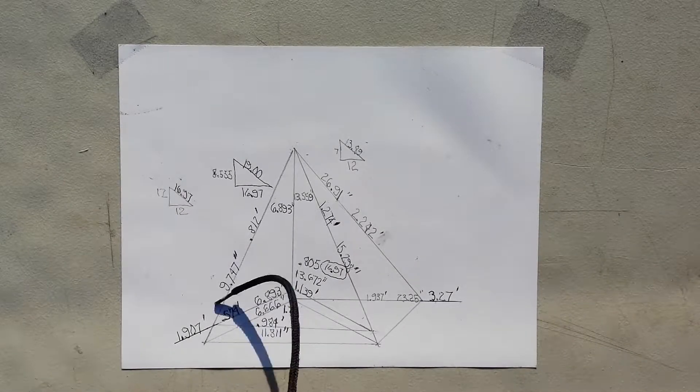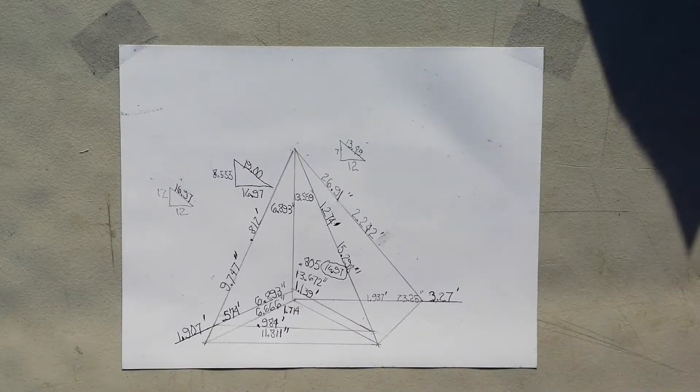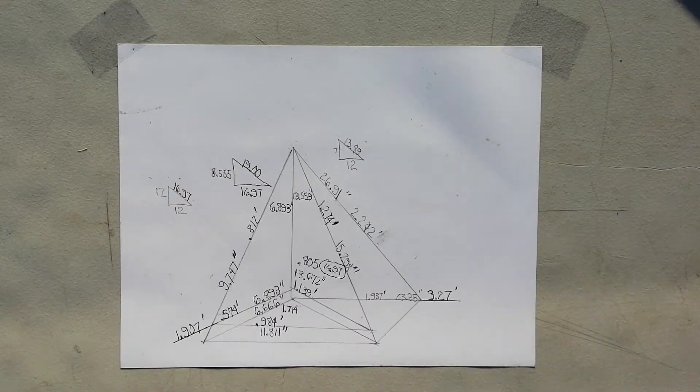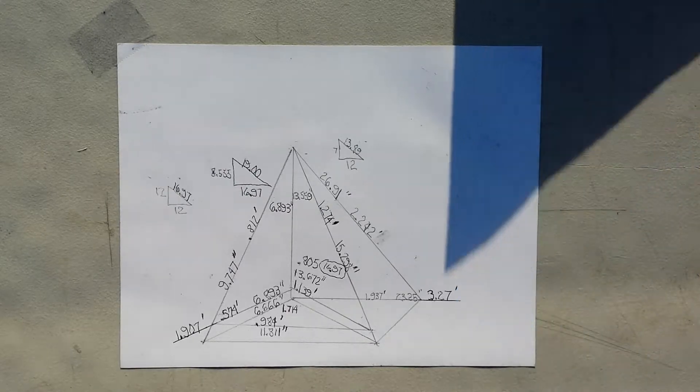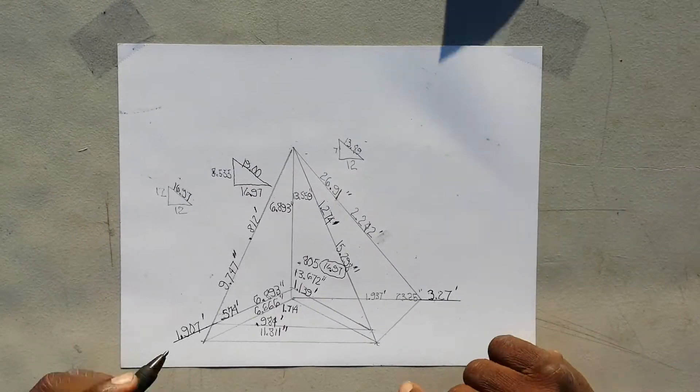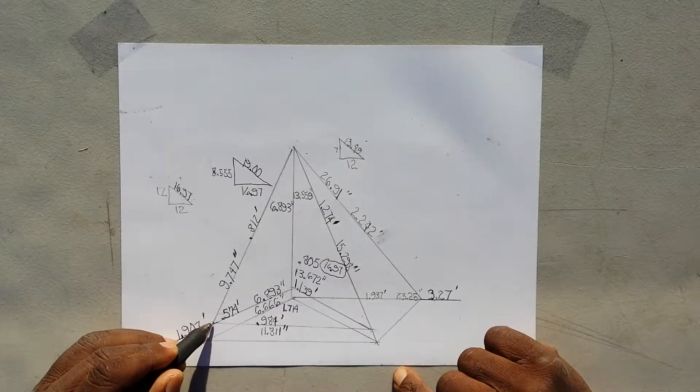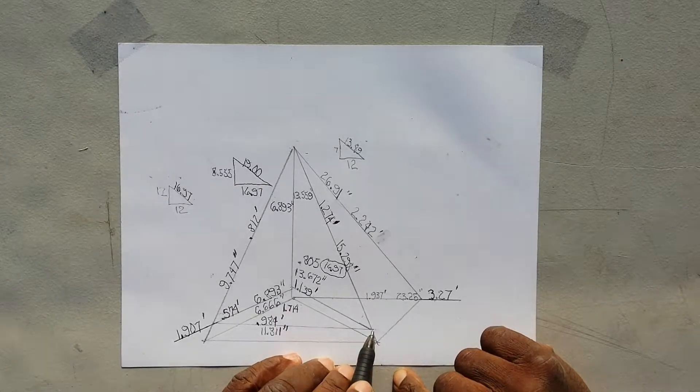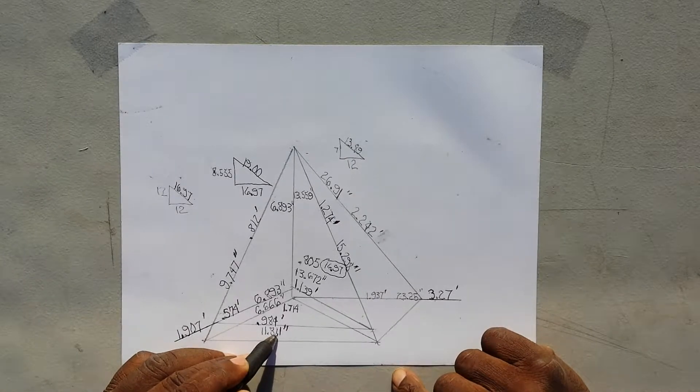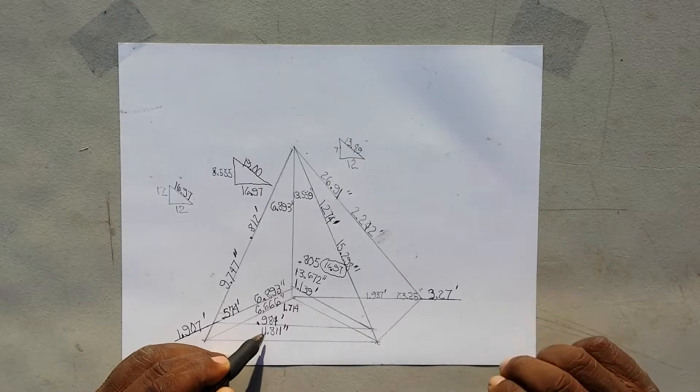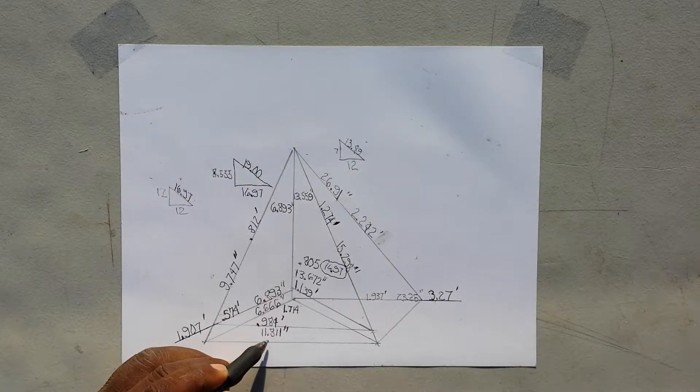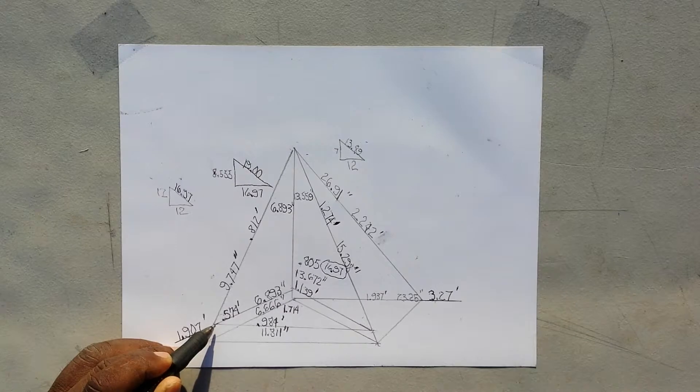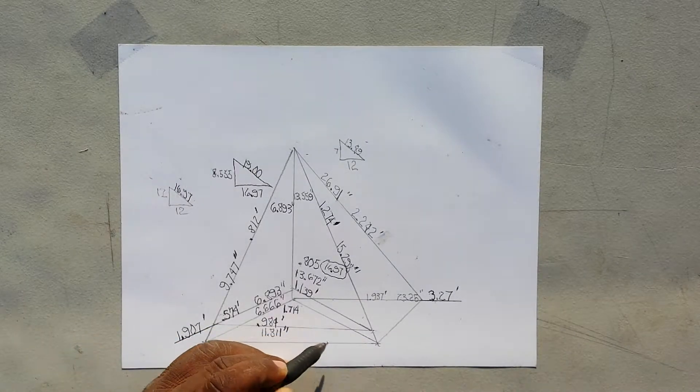Alright y'all, now what we're going to do is deal with some complex stuff here. I want to show you how I do this. The first thing I want to show you - I already showed you that from here to the center of the hip is 11.81 inches, which is 11 and 7/8ths. That's from the side of the rafter all the way out.